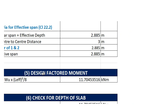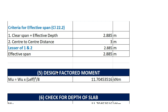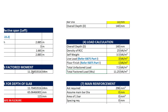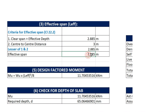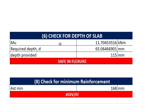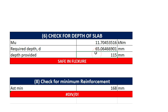Moving to the fifth step, in which we need to calculate the design factored moment. The design factored moment is given by WU × L_effective squared upon 8. WU is the total factored load on the slab and L_effective is already calculated as 2.885. So we got the design factored moment equal to 11.7 kN per meter. Moving to the sixth step, in which we need to check for the depth of the slab. The required depth is calculated as 65 mm, which is clearly lesser than the depth provided. Hence the slab will be safe in flexure.